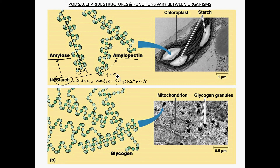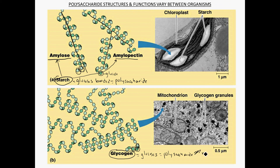Starch is not glucose — it's been chemically modified by bonding the units together. This is how plants store glucose, and when we eat plant material we're eating different types of starches. Glycogen is stored glucose in animals — individual glucose molecules all bonded together. It is a polysaccharide found in animals and is stored in muscle cells and liver cells.